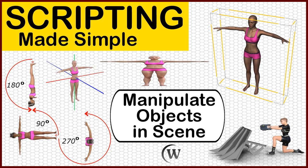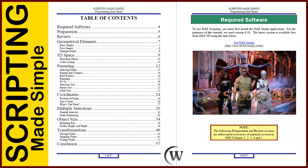Hello everybody, this is Roland of Winter Bros and welcome to this video presentation. We're going to show you an overview of Volume 6 in our Scripting Made Simple series, How to Manipulate Objects in the Scene. Here's a quick peek at the table of contents in the PDF. This tutorial comes with a PDF version, full color and illustrated, and also comes with MP4 and WMV versions, all in the same package.